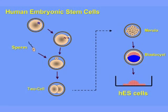When a sperm fertilizes an egg, the egg begins to make multiple copies of all of the genes in the egg. Those multiple copies give rise to new cells.